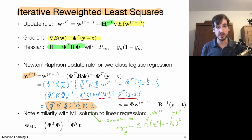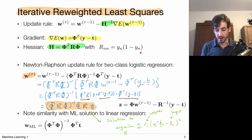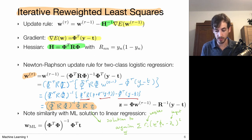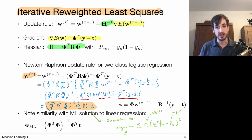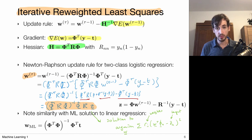That is why this is called the Iteratively Re-weighted Least Squares algorithm: in every update step we essentially solve a weighted least squares problem. The weights r_n are the products of the probability for class one times the probability for the other class, i.e., y_n(1 minus y_n). The targets z_n are also updated at each step. Both the weights and the targets depend on the current model parameters w and are updated each iteration.